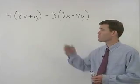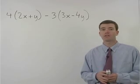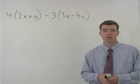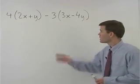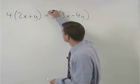To simplify the problem you see here, we're going to use both the distributive property and combining like terms. But before we do anything we need to change these minus signs to plus negatives.